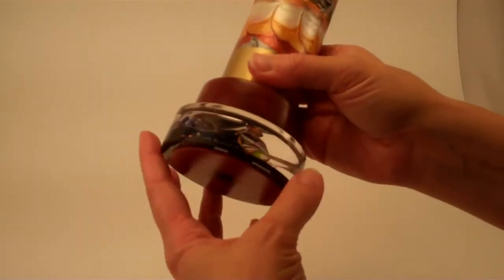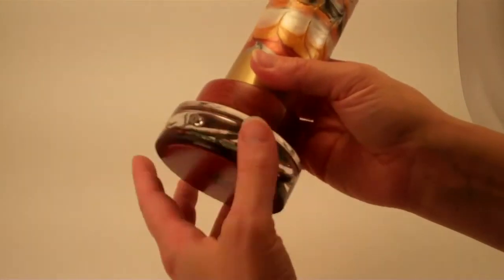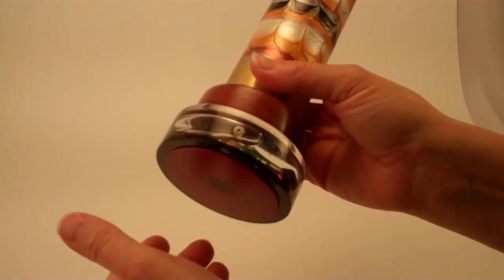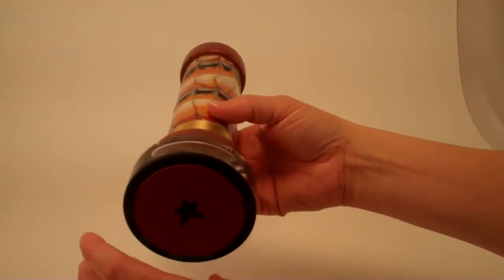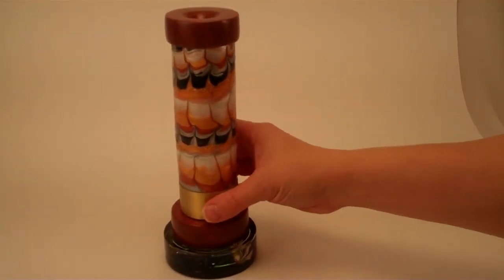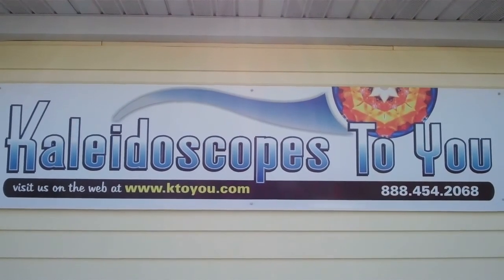And the object cell itself turns along with the bubinga mounting and spins beautifully on its mechanism. This kaleidoscope is Cosmic by the Paredes and is available here at Kaleidoscopes2U. See you there.